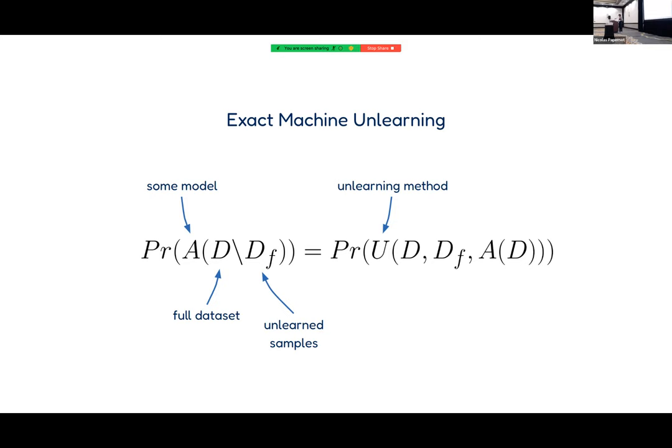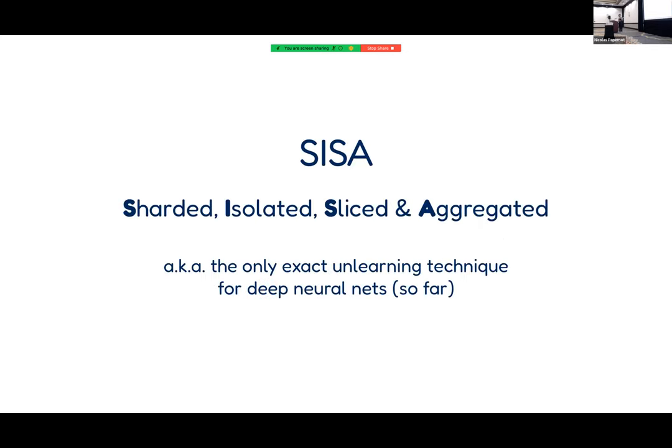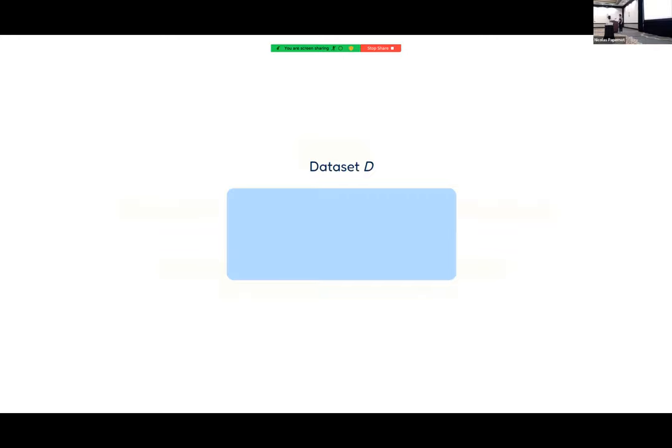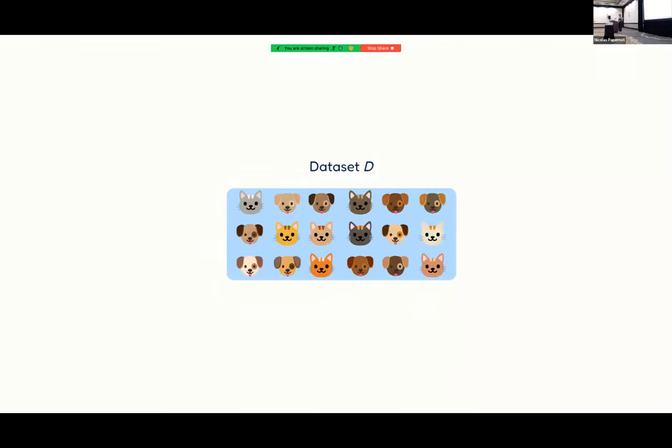I'm going to talk about SISA, which stands for Sharded, Isolated, Sliced, and Aggregated training. So far, this is actually the only exact unlearning technique that works for deep neural nets — the other ones only work for regression.